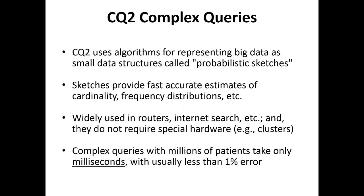The trade-off is that you introduce a tiny bit of error, and these sketches have been designed over the years to be very, very accurate. You can gain many orders of magnitude in performance and they're tunable for the particular error that you want. With sketches added to i2b2, we're able to run complex queries on millions of patients in literally milliseconds with usually less than one percent error. The way error works is: 95% of the time, what are the bounds that the error is from the actual answer?